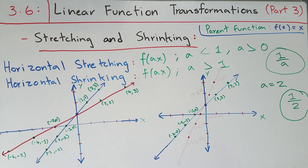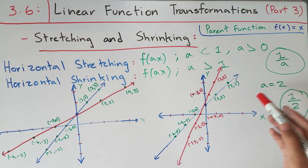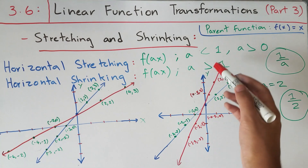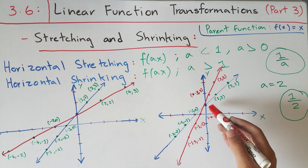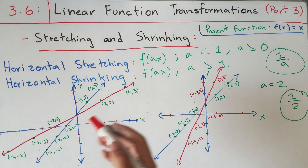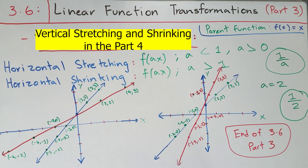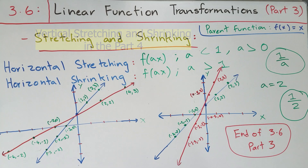Connecting the dots, we can see all points on the original function f of x equals x plus one have been shrinked horizontally — we halved all the x values because our a was positive two, which is greater than one. Note that the y-intercept is still zero comma positive one, but the x-intercept has changed, just like with horizontal stretching. That's it for Section 3.6 Part 3. I hope you found this video helpful. Look out for Part 4, leave a like, subscribe for more videos, and I'll see you in the next video. Bye!